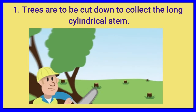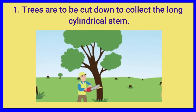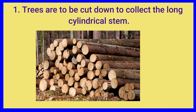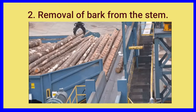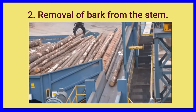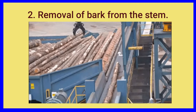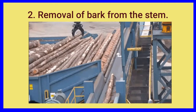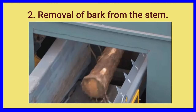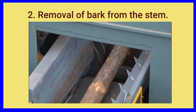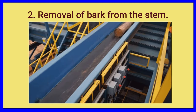First of all, trees are to be cut down in large numbers to collect the long cylindrical stem. Then from this stem, the bark is removed. The outer layer of a stem, which is called bark, is removed by machine.